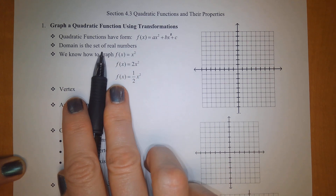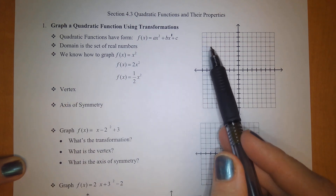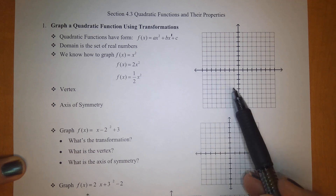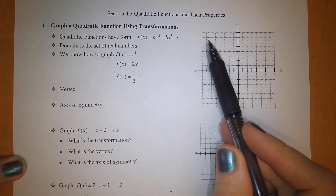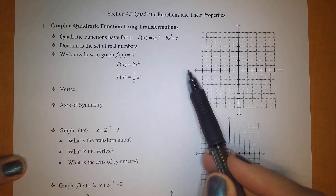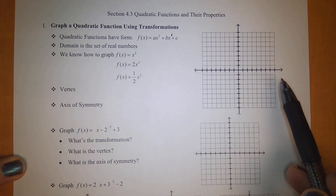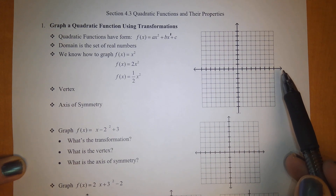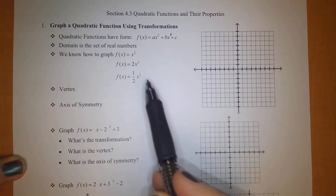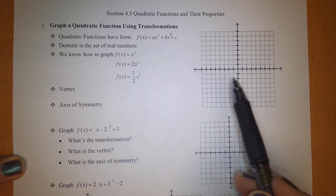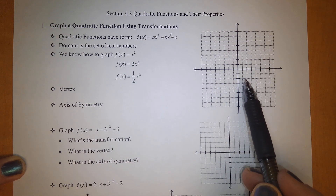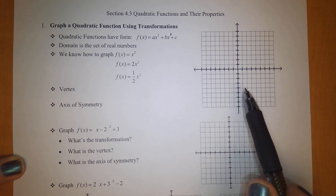The domain is all real numbers because parabolas will look like a U, so the domain is all real numbers ranging from negative infinity to positive infinity. We already know how to graph these three functions, so let's do that over here as a recap of what we learned back in Chapter 3.